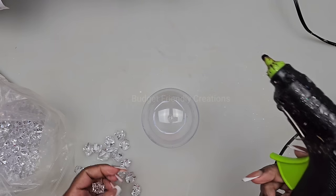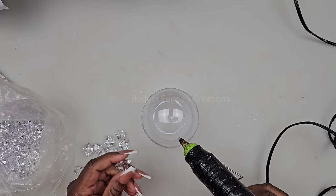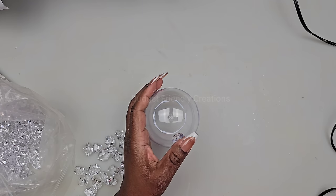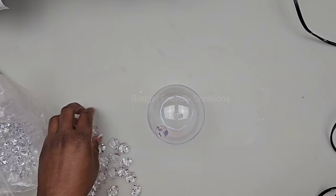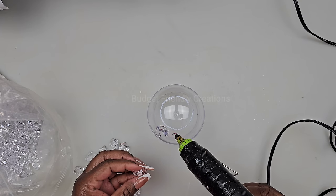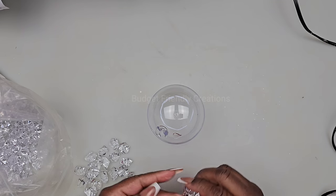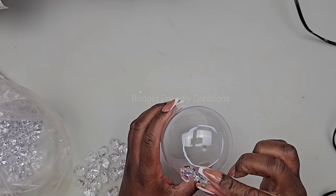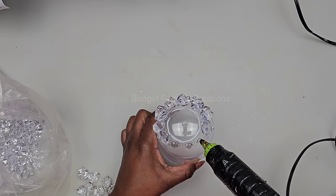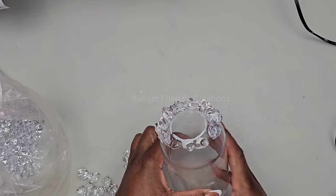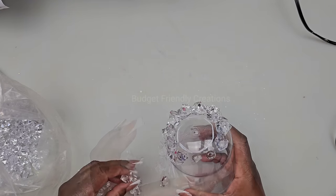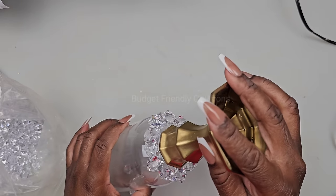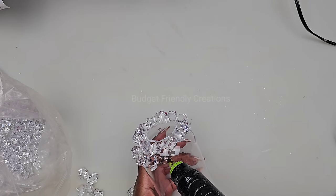I'm going to be using these ice gems and I'll leave a link for all the items that I'm using in the description box below. I'm using my hot glue to place my gems going right around that area that I mark, and I'm just making sure that I leave enough space to place my candle holder when I'm done. I'm just checking to make sure that it's okay and then I'll continue adding my gems.